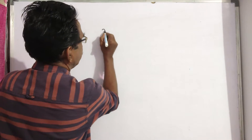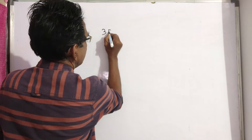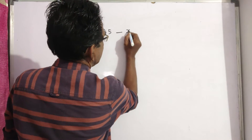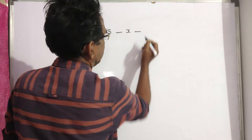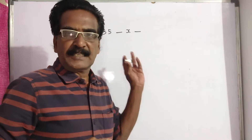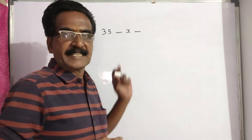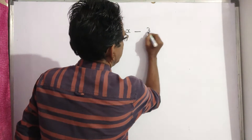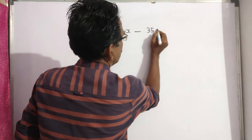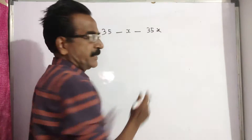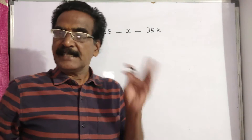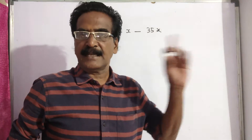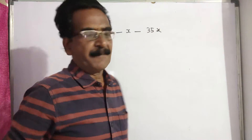There were 35 students, friends, and the average expenditure of the 35 students is X. Then the total expenditure — the initial expenditure — was 35X.